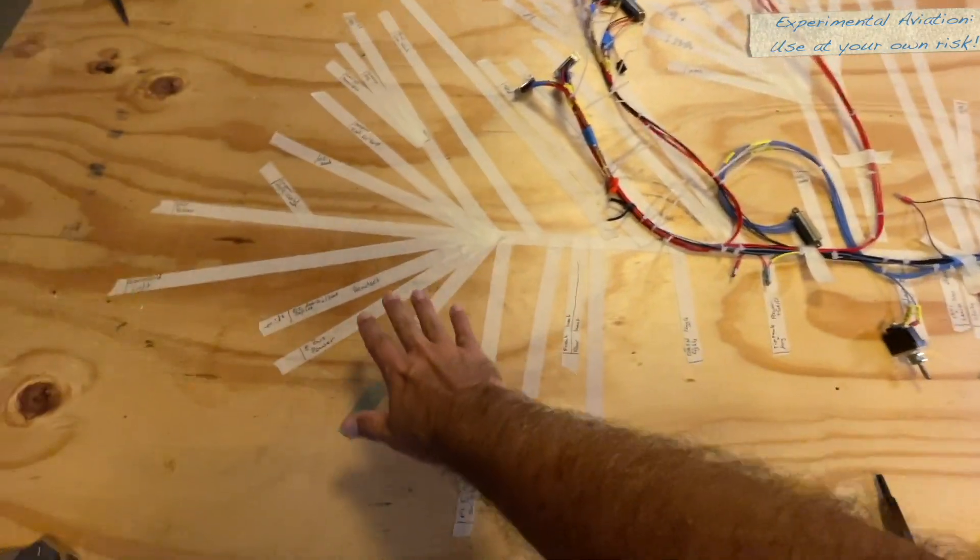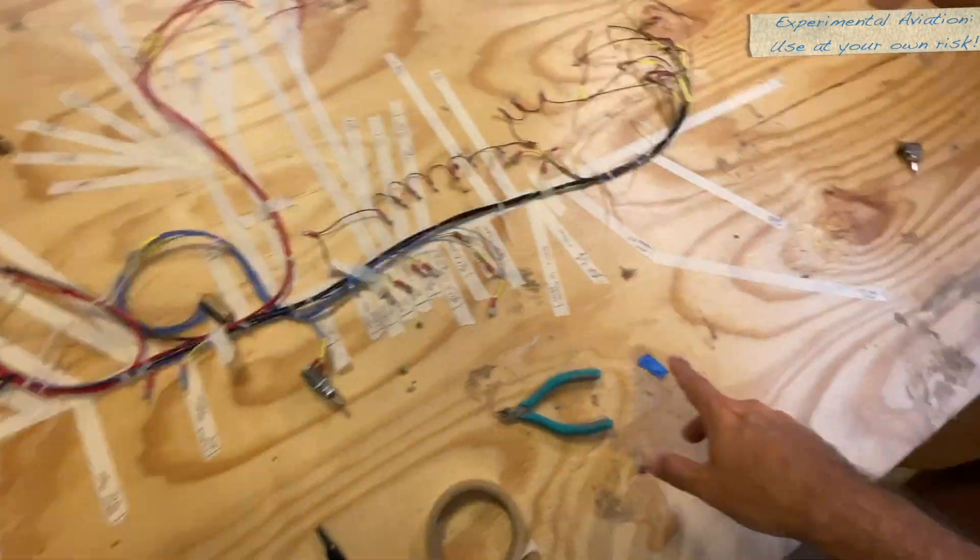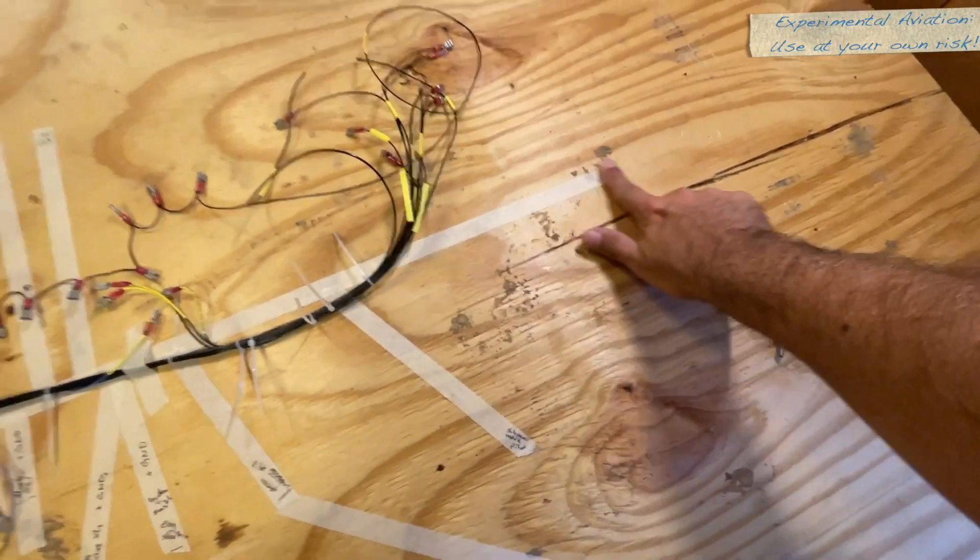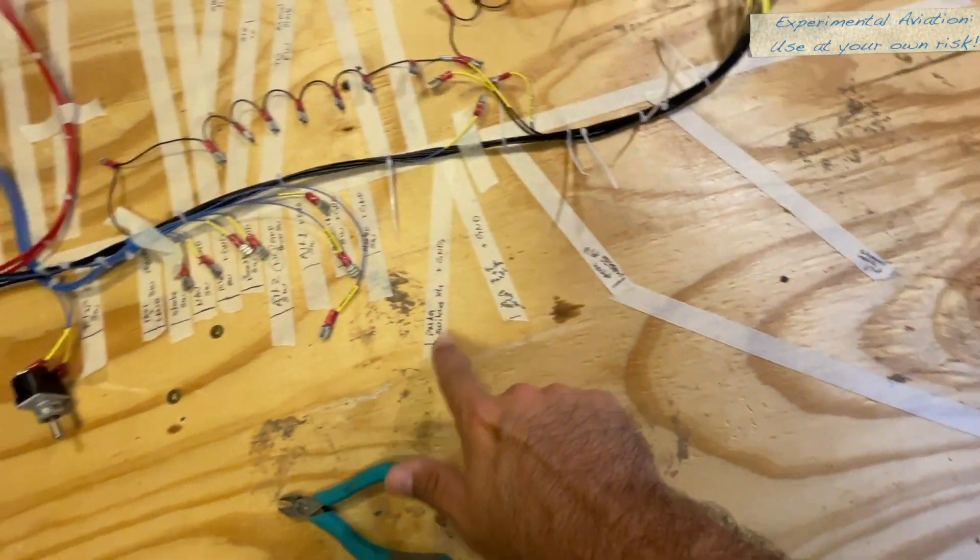We laid it out so we put the ribbon down over here, big rats next to the ribbon, slowly pulled it out and then we marked what each device is and the wire lengths.